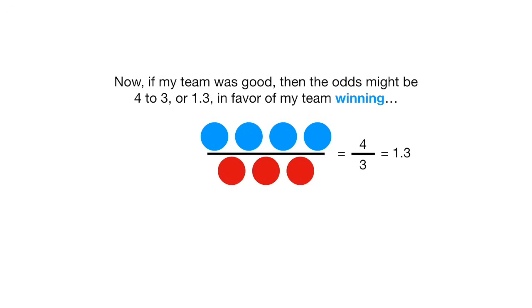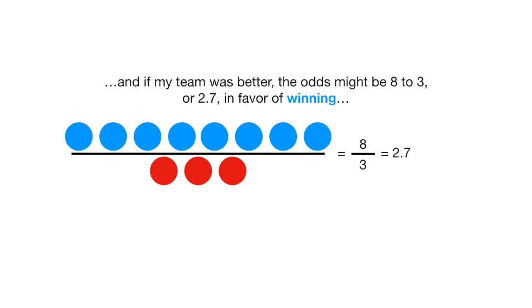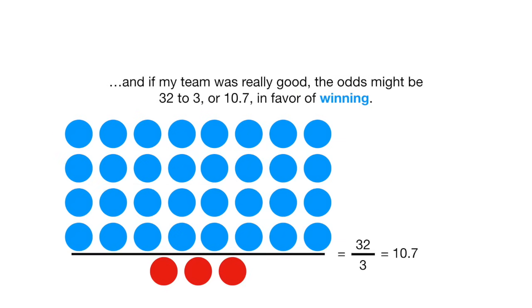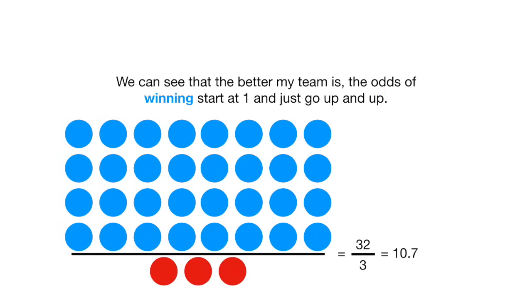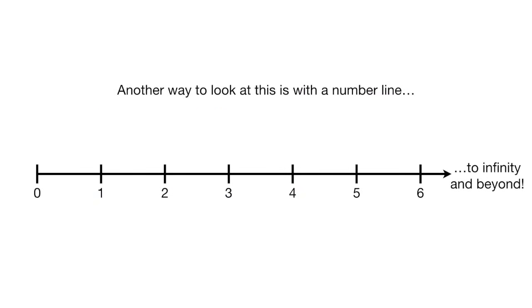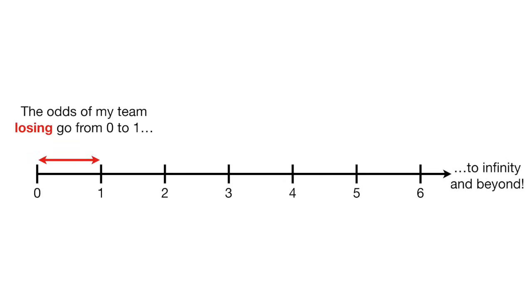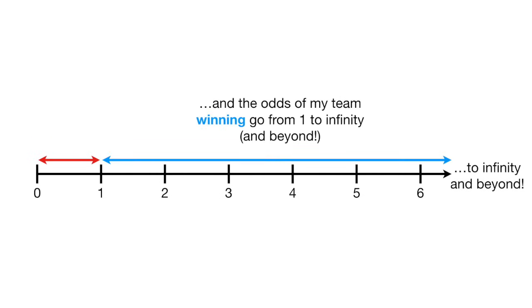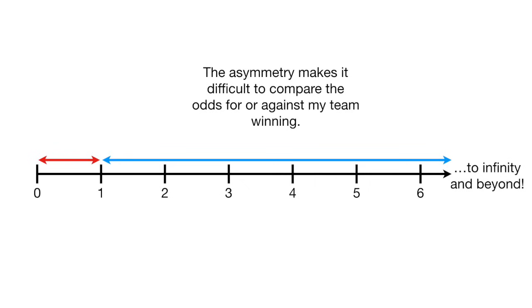Now, if my team was good, then the odds might be 4 to 3, or 1.3 in favor of my team winning. And if my team was better, the odds might be 8 to 3, or 2.7 in favor of winning. And if my team was really good, the odds might be 32 to 3, or 10.7 in favor of winning. We can see that the better my team is, the odds of winning start at 1 and just go up and up. In other words, if the odds are for my team winning, then they will be between 1 and infinity. The odds of my team losing go from 0 to 1, and the odds of my team winning go from 1 to infinity and beyond. The asymmetry makes it difficult to compare the odds for or against my team winning.